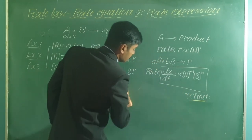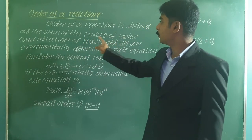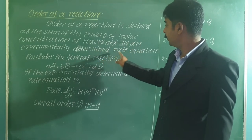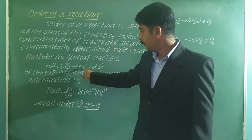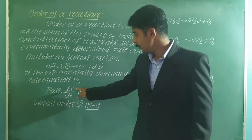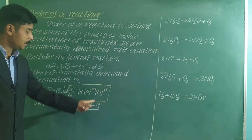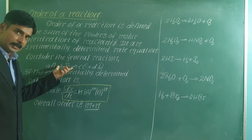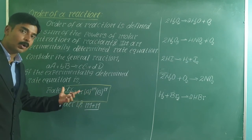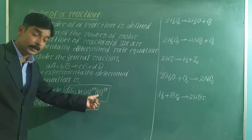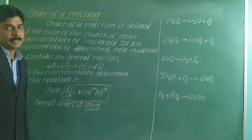Order of a reaction is defined as the sum of the powers of molar concentrations of reactants in an experimentally determined rate equation. For a general reaction with rate = K[A]^M [B]^N: M is the order with respect to A, N is the order with respect to B, and M + N is the overall order of the reaction.